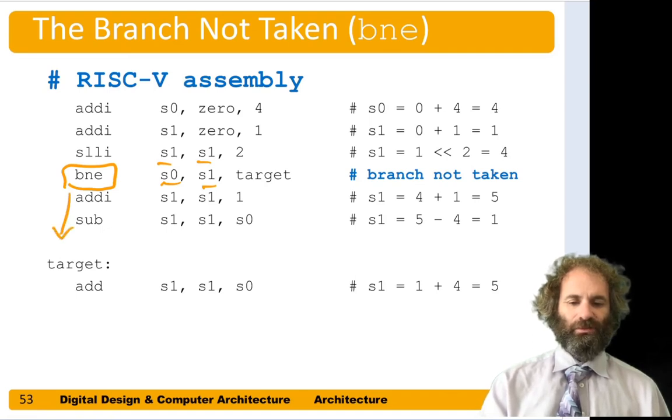Add I, S1 gets S1 plus 1. S1 is 4 plus 1, makes 5. Then subtract. S1 gets 5 minus 4 gives us 1. So now S1 is 1. And in our final addition, add S1 gets 1 plus 4 makes 5. So we get a different result because the branch was not taken instead of taken.